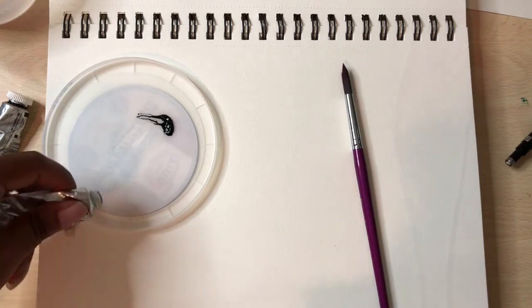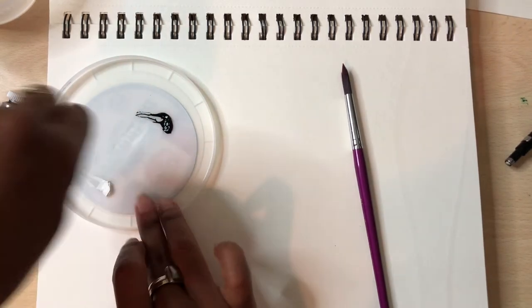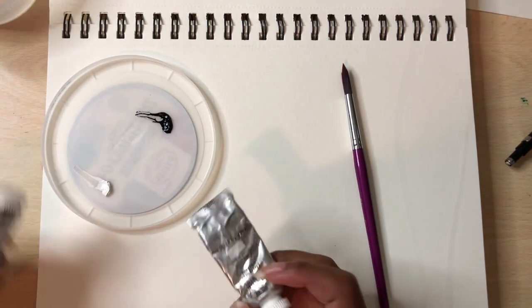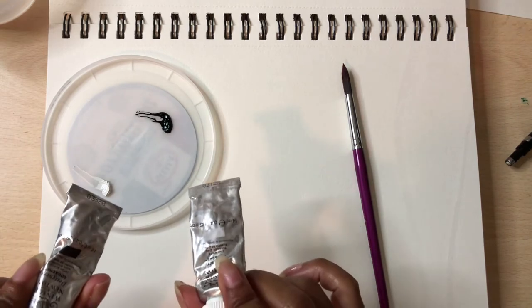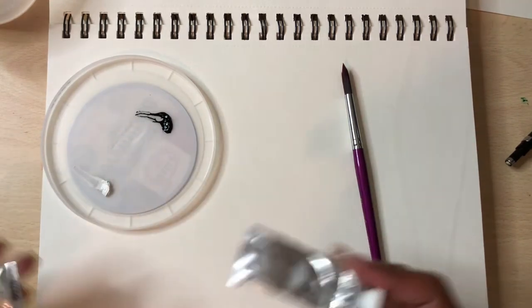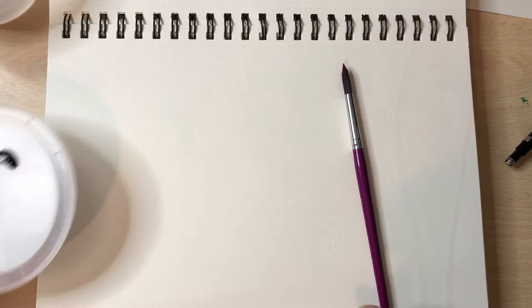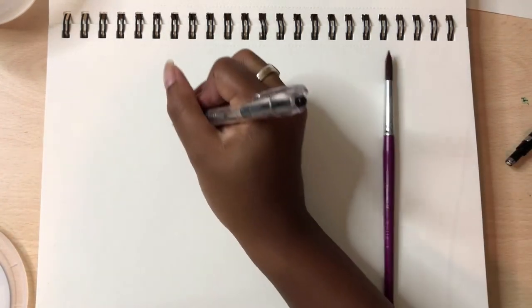I really like using it directly out of the tube for really, really dark blacks. If I was just doing kind of a tonal study, it would probably be fine to reactivate it. If it comes in tubes, that's what I recommend, to get the ones that come in tubes so you can get those really crazy opaque kind of colors.